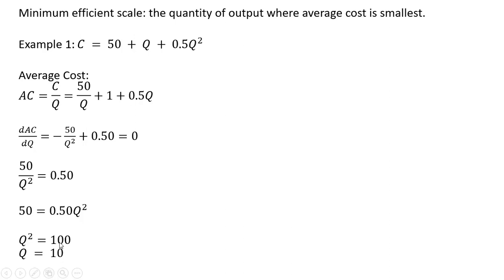Raising both sides to the one-half power or taking the square root of both sides, Q equals 10. So at 10 units of output, average cost is minimized or at its smallest value.